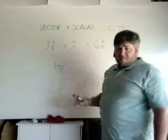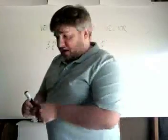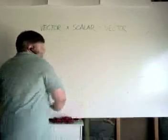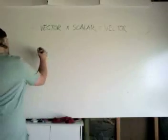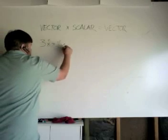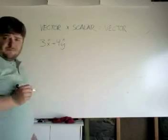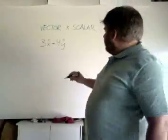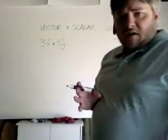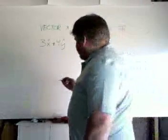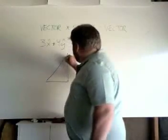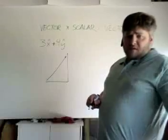Now, if it was a more complicated vector, instead, let's say my vector was something like 3x hat plus 4y hat. So 3x hat plus 4y hat. So if you remember what that means, that means I'm going to go 3 in one direction, 4 in the other direction, and this is my vector.